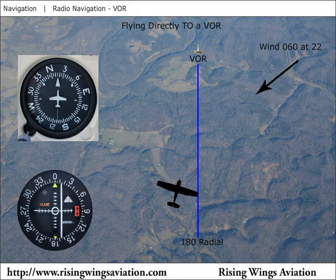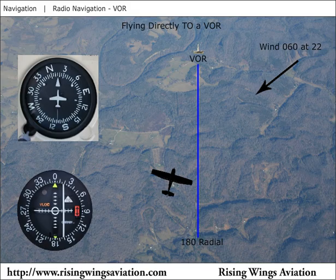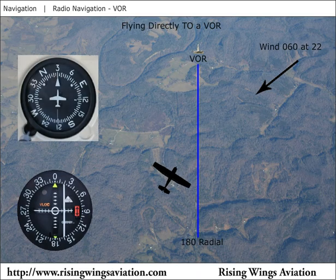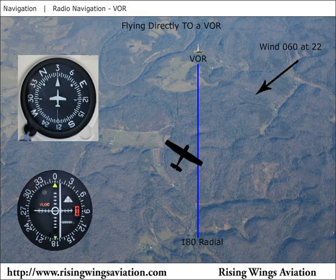Maintaining this new heading, observe the movement of the CDI. Let's say it continues to move right. We can gather that a 15 degree heading is not enough to counteract the wind. A greater correction is required, so let's turn further right to a heading of 030. While maintaining a 030 degree heading, the needle begins to move back towards the center of the display. This means a 030 heading more than counteracts the wind, and we are returning to our desired course.